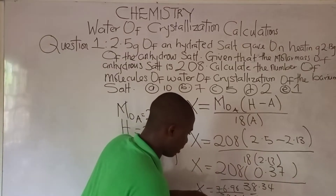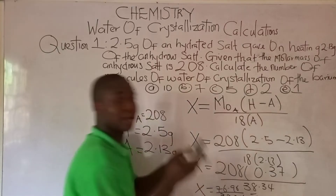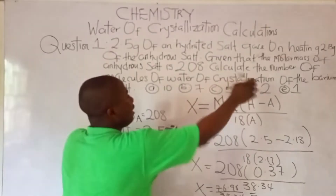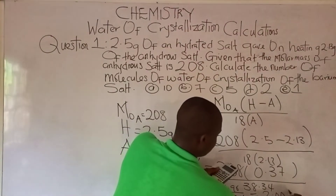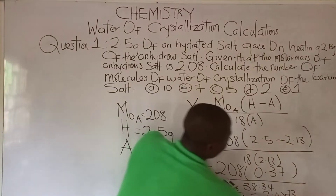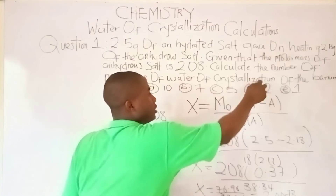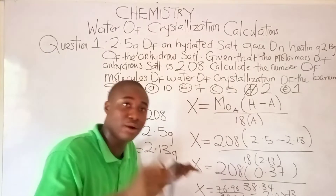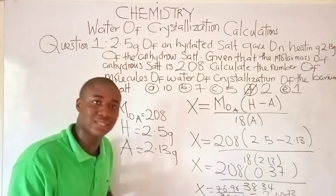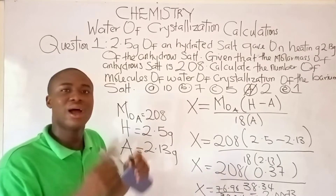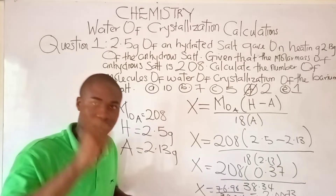Dividing 76.96 by 38.34, we get the number of molecules of water of crystallization to be approximately 2.007. So the answer is Option D. You can see that solving problems under this aspect is very easy. Now let's move to the second example to understand this concept better.